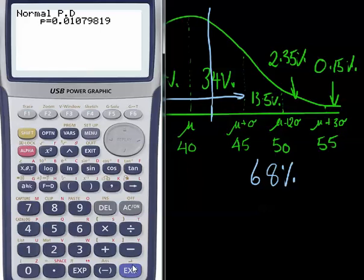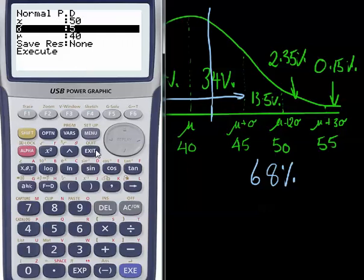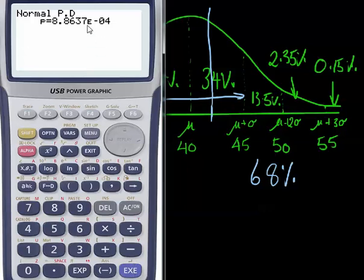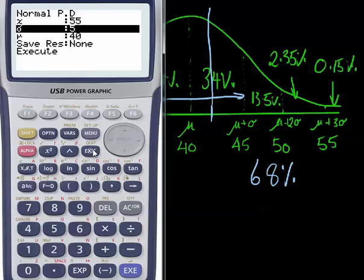So that means when we're getting up to the mean of the population plus three times the standard deviation, there is not going to be much data sitting at that particular value. In fact, if we go there and change it to 55, we're going to find we have like this e to the minus 4. It's a massively small number. So it's a massively small percentage of data sitting right up here. So there are a few of the features that work really well for our graphics calculator. And hopefully you've found this vodcast to be useful. Alright, good luck.